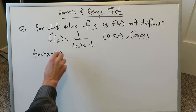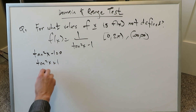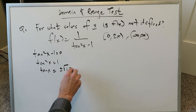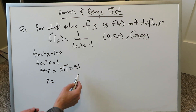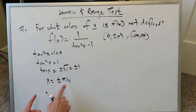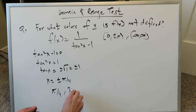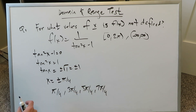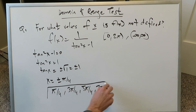Set tan squared x minus 1 equal to 0, so tan squared x equals 1, giving tan x equals plus or minus 1. Therefore x equals inverse tan of plus and minus 1, which yields plus and minus π over 4. This means we're looking at all the 45-degree angles: 45, 135, 225, and 315 degrees, which we write as π over 4, 3π over 4, 5π over 4, and 7π over 4. Within the domain 0 to 2π, these four values are where the function is not defined.